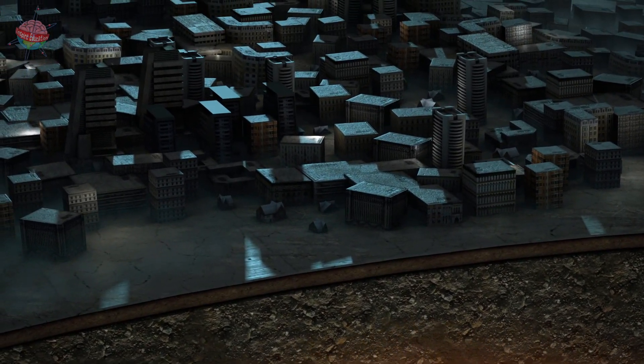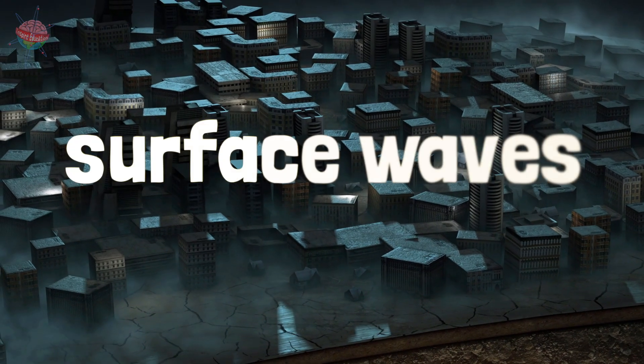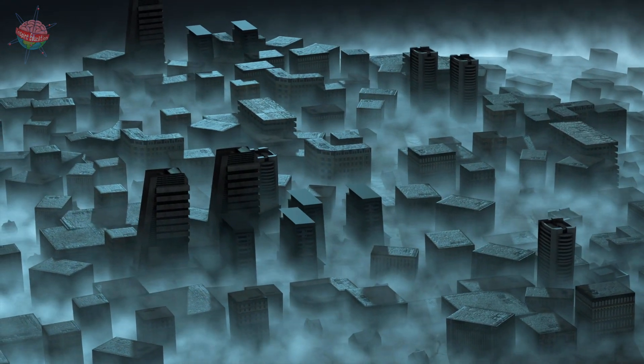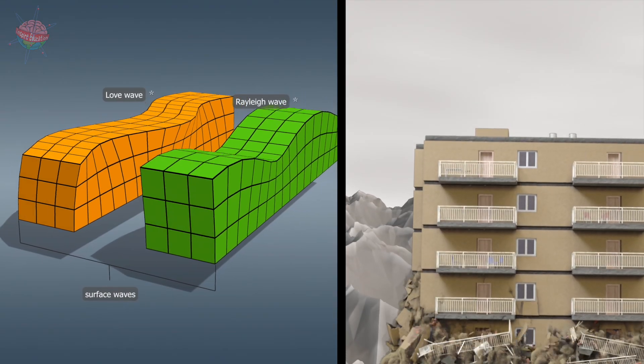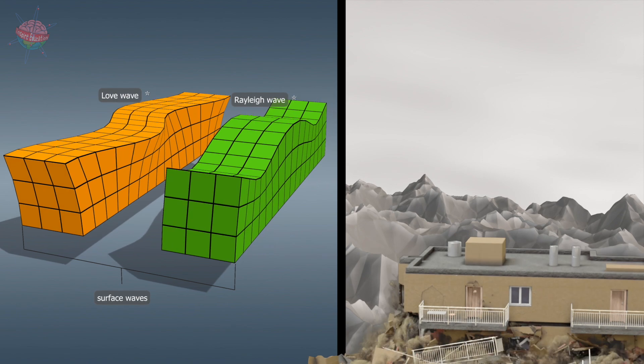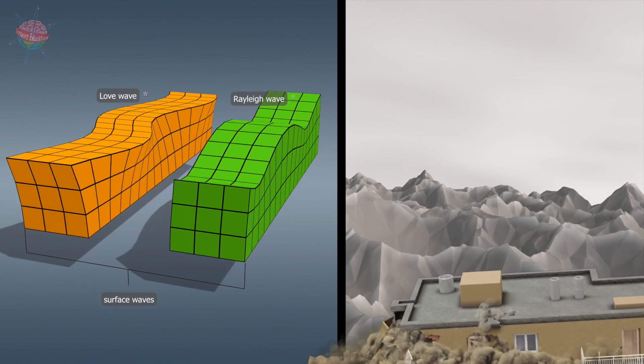Waves travelling along the surface of the Earth are called surface waves. They result from the interference of the p-waves with the s-waves. Surface waves travel at lower speeds than body waves, but their amplitude is greater. They cause the greatest damage.